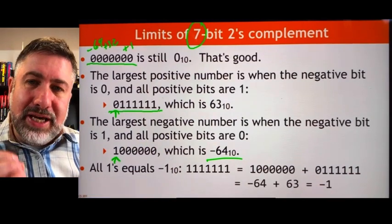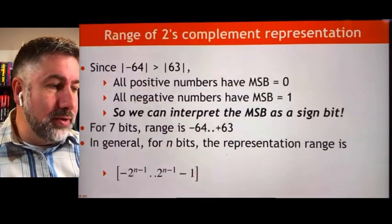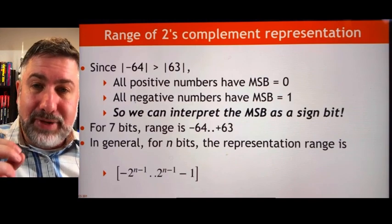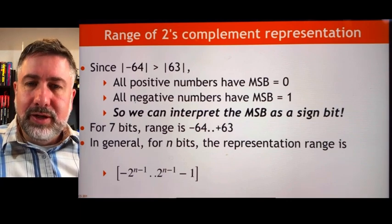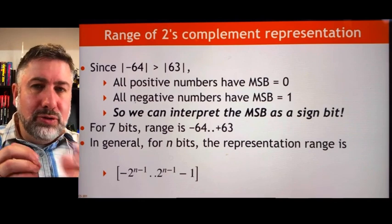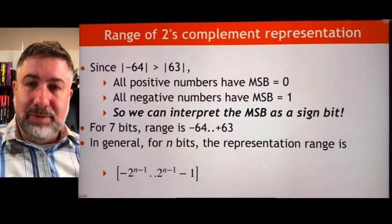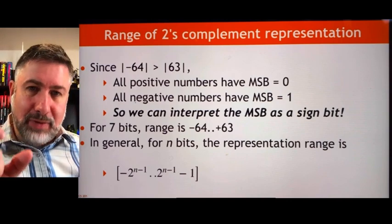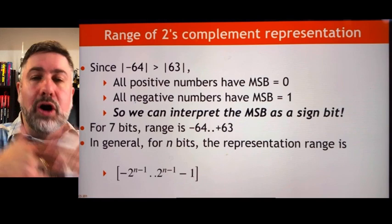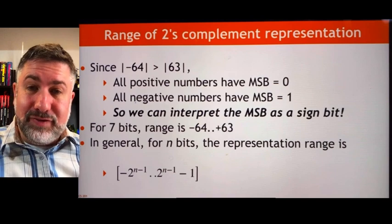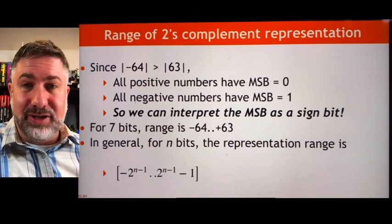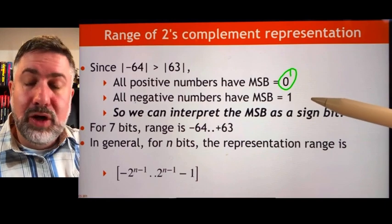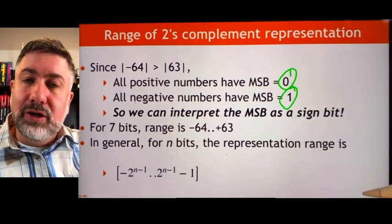This is key: because the biggest negative number is larger in absolute value than the biggest positive number, the top bit tells us whether the whole number is negative or positive. If that top bit is a 1, there's nothing you can do in the other bits to make the value be bigger than 0. If the top bit is 1 and all other bits are 1, you get -64 + 63 = -1. So all numbers with 1 at the top bit are negative, and all numbers with 0 at the top bit are positive.